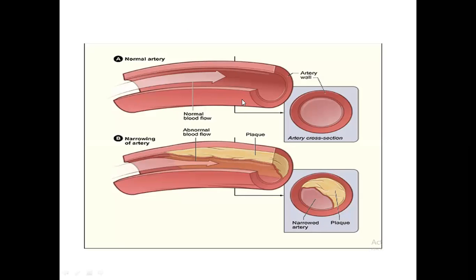This is a normal artery - if we look at its cross section, this is the artery wall, and this inner circle is where blood flows. Now in this artery where plaque formation has occurred, you can see cholesterol or calcium has deposited. The blood flow channel has narrowed, and looking at the cross section, you can see that half is filled with plaque and only half remains open. This is actually atherosclerosis.